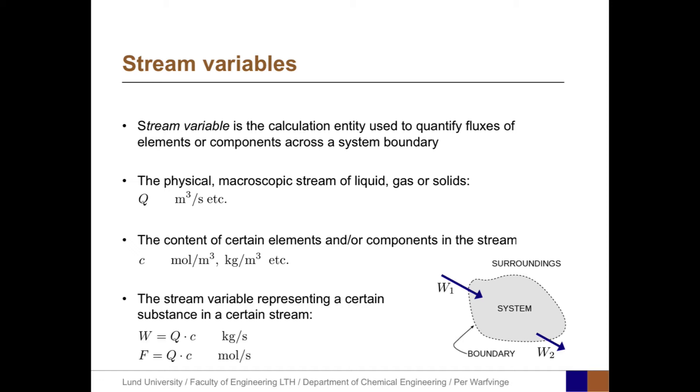The stream variable represents a certain substance in a certain stream. If we make calculations in weight units, the stream variables are denoted W, the product of Q times C, with units like kilograms per second. For molar fluxes, we use F, which equals Q times C. The picture illustrates two physical flows, one entering and one leaving a system, represented by stream variables W1 and W2.